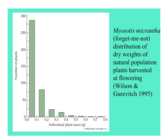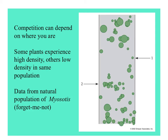In this graph, you can see the distribution of plant sizes as measured by mass or weight of the plant. In a population of forget-me-nots, most of the plants are very small. Fewer and fewer have large size and mass at the time of flowering. These diagrams show the same data: the bigger circles represent bigger plants of forget-me-not, the smaller circles are tiny.